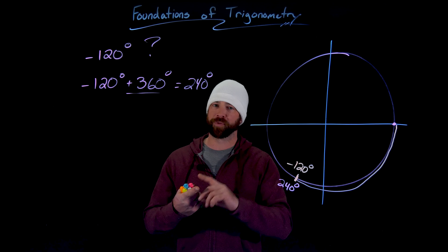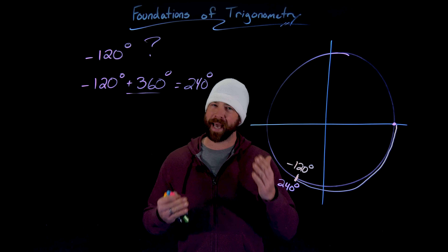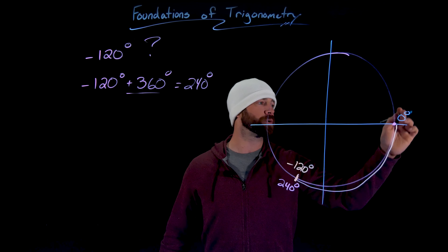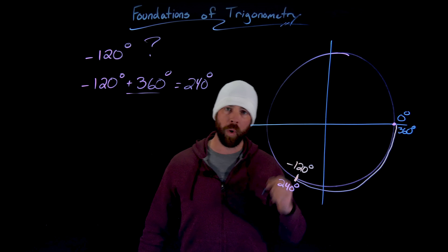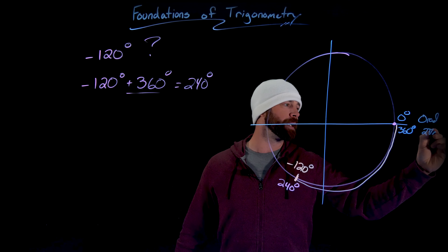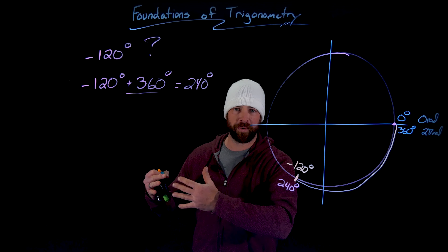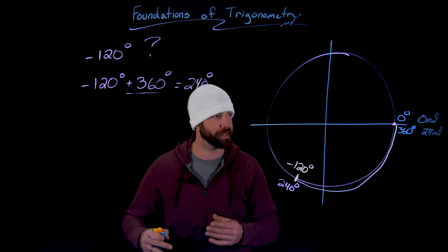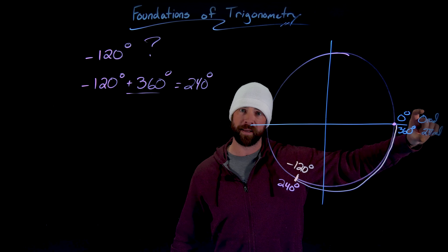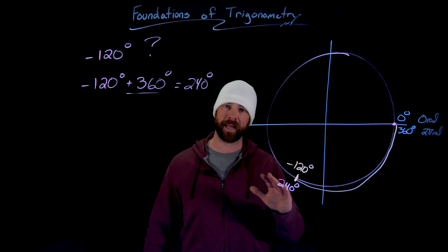This idea of coterminal angles can really help you if you're confused about a negative angle or a really large positive angle — to find out where it ends up on the circle. Just add or subtract multiples of 360 if you're in degrees, or multiples of 2 pi if you're in radians, until you get a manageable value. What we're looking for is a degree measure between 0 and 360, or in radians, from 0 to 2 pi. For example, for 17 pi over 3 radians, just subtract 2 pi repeatedly until you get something between 0 and 2 pi.